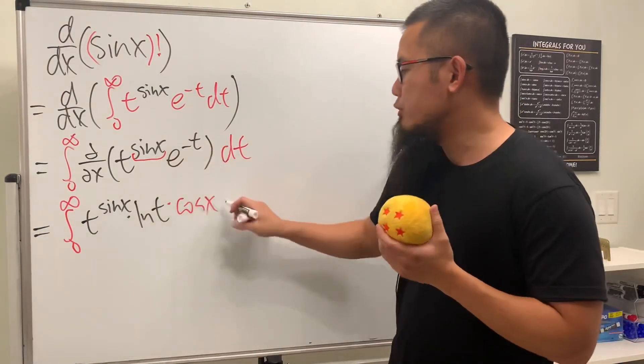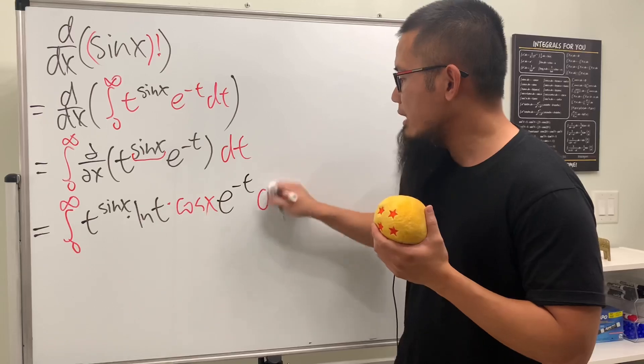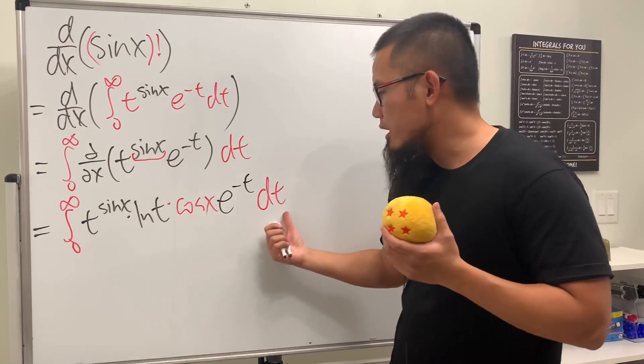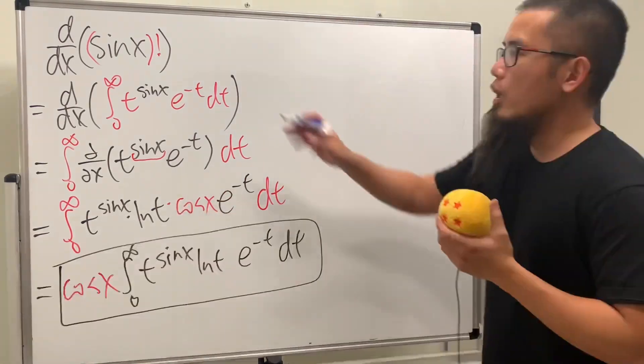And then of course this is just a constant multiple. I'm just going to note it as it is right here. And that's pretty much it. But in the t world, we can just put the cosine x on the outside with this sin x factorial.